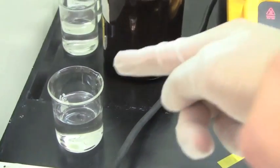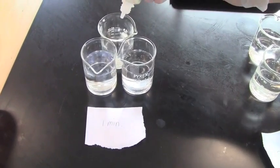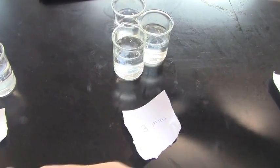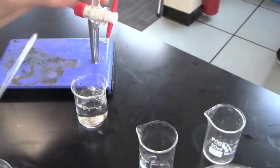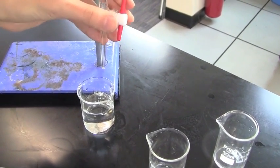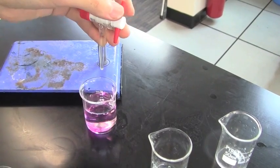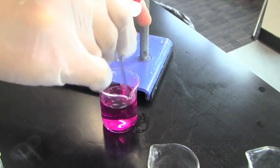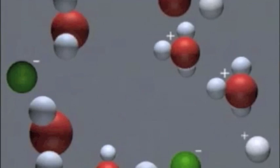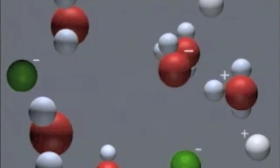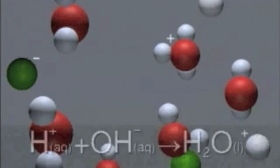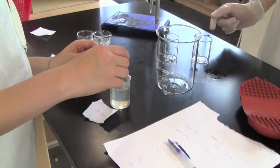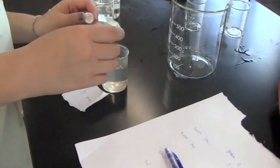Then began the titration process. First, a few drops of phenolphthalein was added into each solution. Then the beakers were placed under the burette and NaOH was slowly added by one member, while the solution is continuously stirred by another member. When the solution turns pink, it indicates that all the H ions had reacted with the OH ions from the NaOH. The volume of NaOH added is recorded and from this data, the molarity and pH of each solution derived.